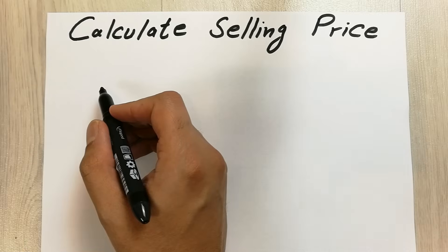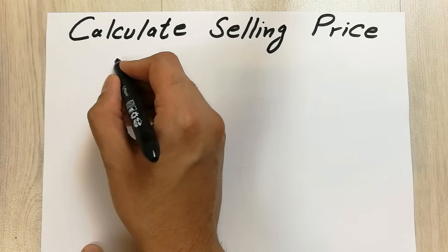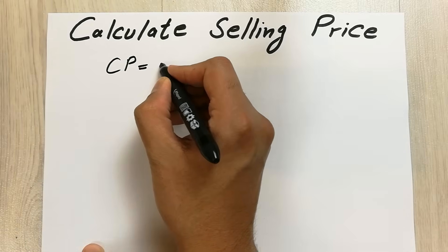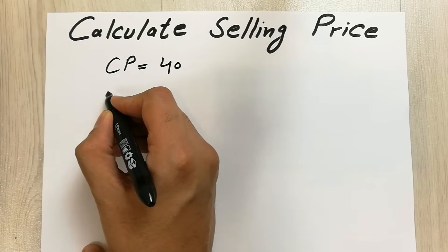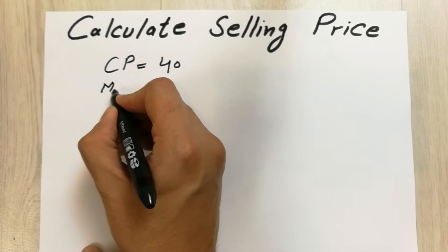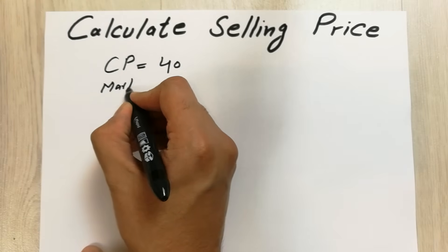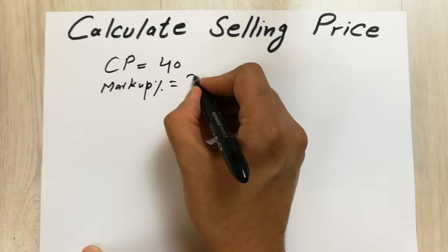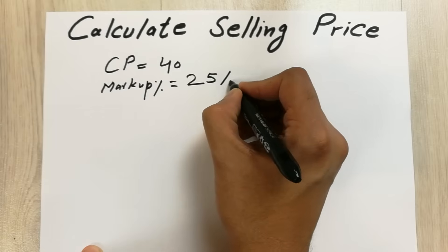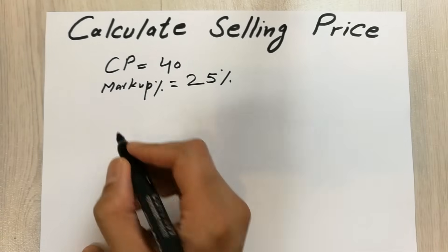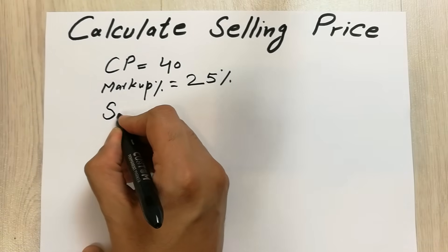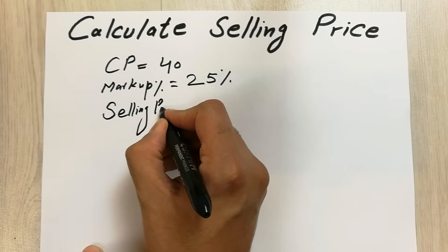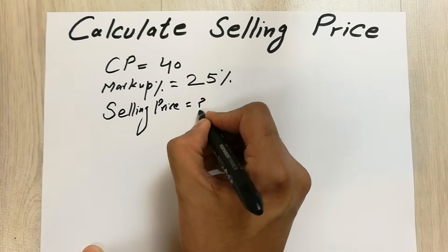Let's say you have a product and the cost of the product is 40 dollars, and the markup percentage is 25%. Now you want to calculate the selling price.